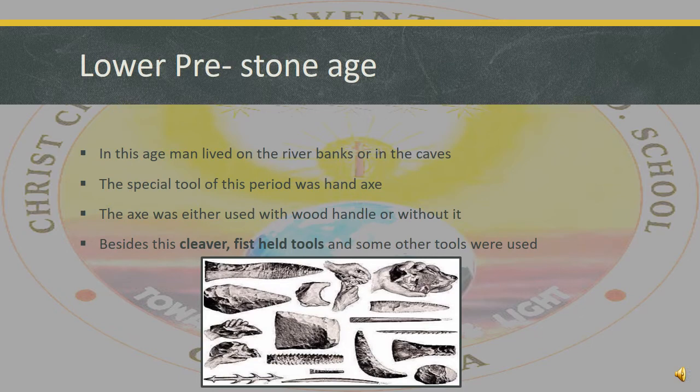After understanding the Pre-Stone Age, let's understand its subcategories individually. Lower Pre-Stone Age: in this age, men lived on river banks or in caves. The special tool of this period was the hand axe, which was used either with wooden handles or without. Besides this, a fist-held tool and some other tools were used. As you can see in this image, how these tools were held and used.